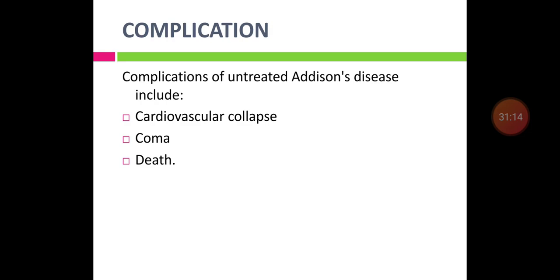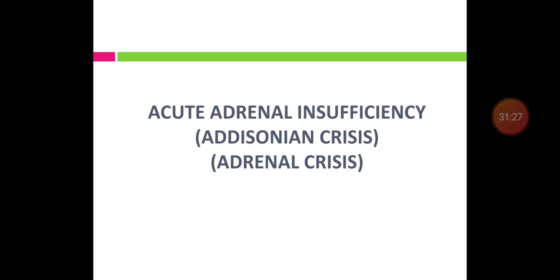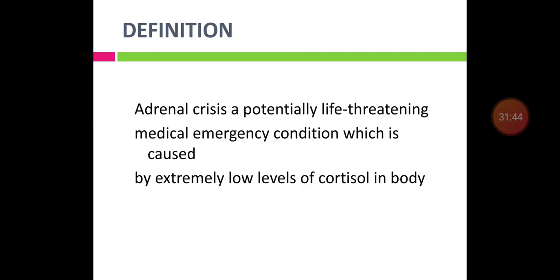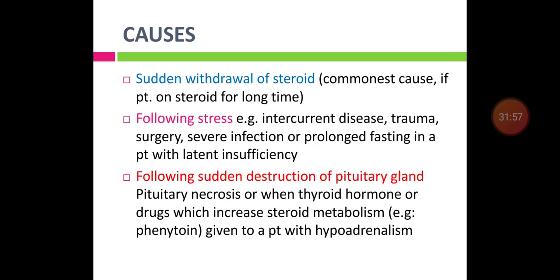Complications of Addison's disease: if untreated, patients develop cardiovascular collapse due to hypotension, coma, and death. Acute adrenal insufficiency, also called Addisonian crisis or adrenal crisis, is a potentially life-threatening medical emergency caused by extremely low cortisol levels. The most common cause is sudden withdrawal of steroids after prolonged use. Other causes include stress, intercurrent disease, trauma, surgery, infection, or prolonged fasting in patients with latent adrenal insufficiency.